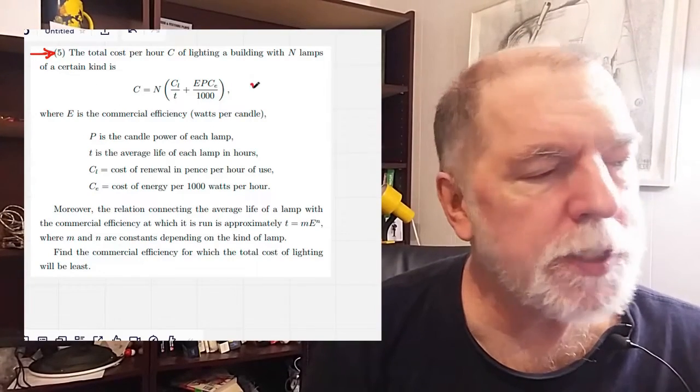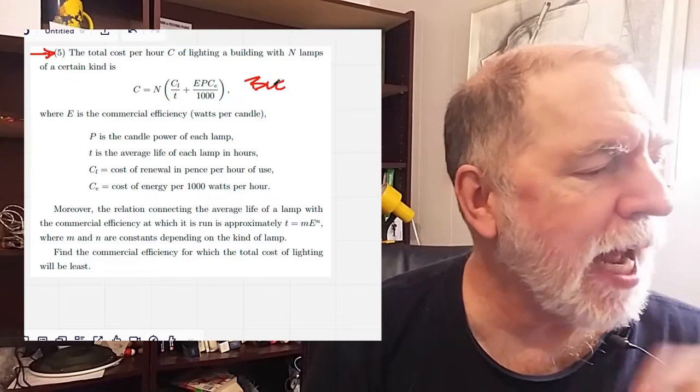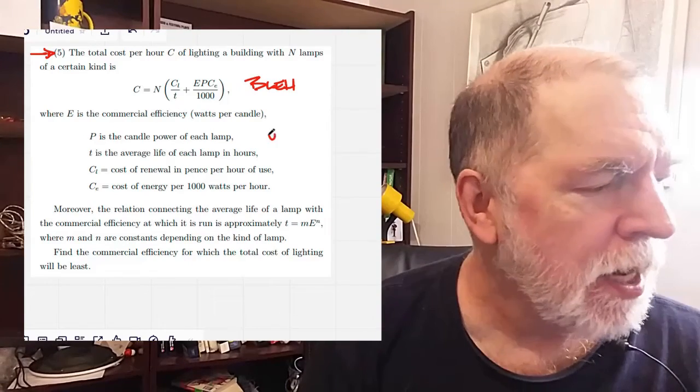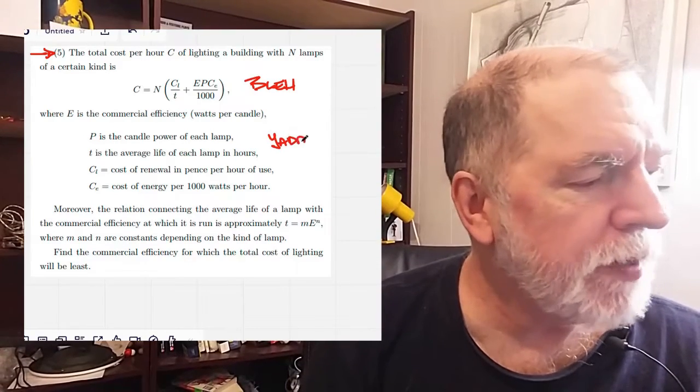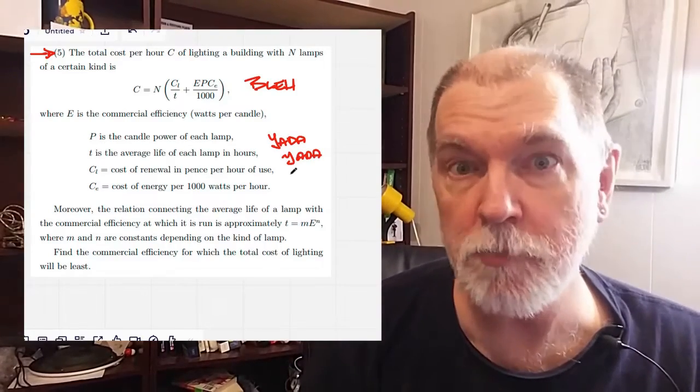The total cost per hour C of lighting a building with N lamps is blah, where E is commercial efficiency and yada yada yada yada. This is how you read these.